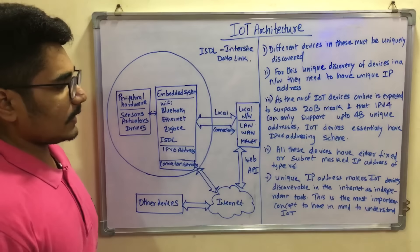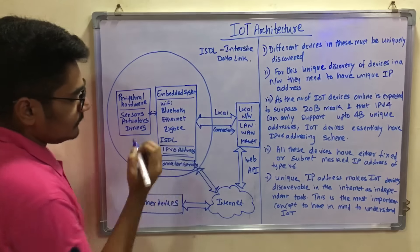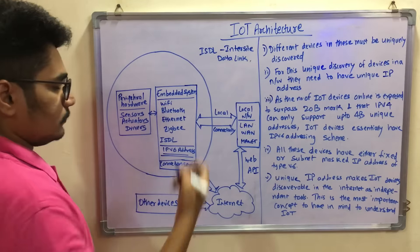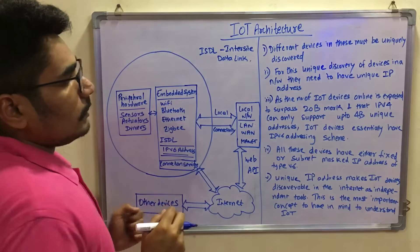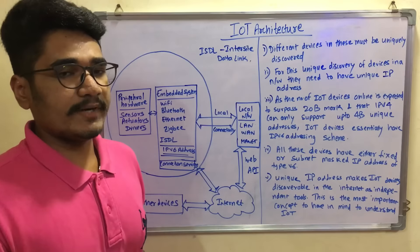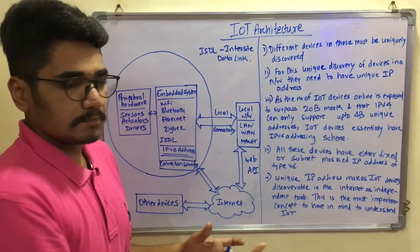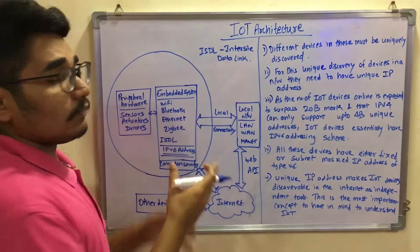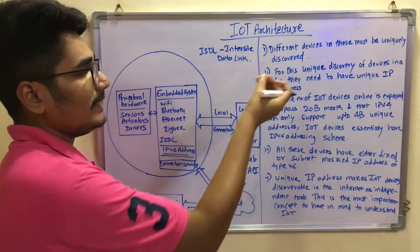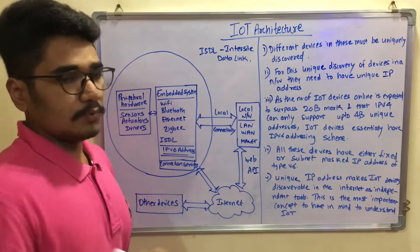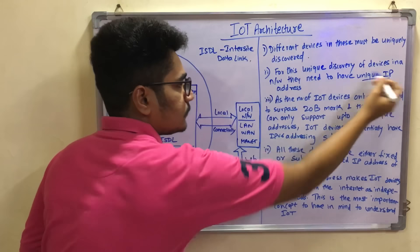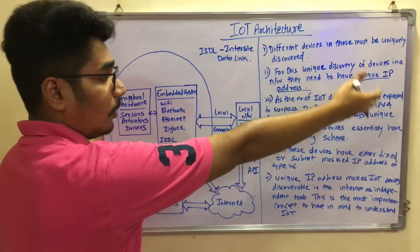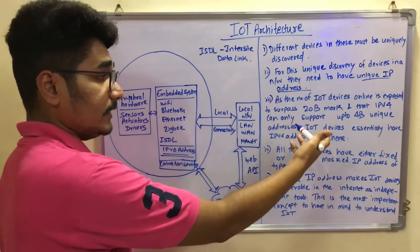Now, I mentioned that the IPv6 addressing scheme is employed in IoT and not IPv4. IoT devices require a large number of different devices to communicate, and each device must be uniquely discovered. To uniquely identify them, you need to assign unique IP addresses. The number of IoT devices online is expected to surpass 20 billion in future years, with 2020 as a key threshold.